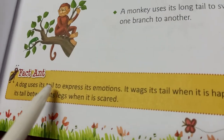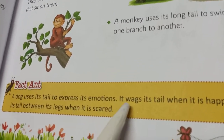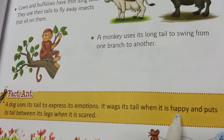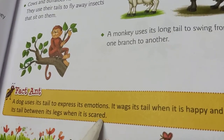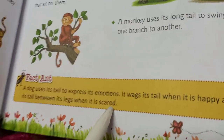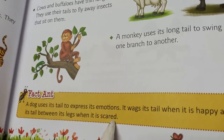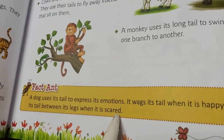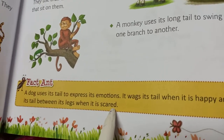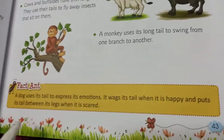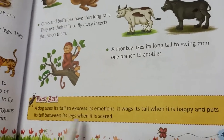A dog uses its tail to express its emotions. It wags its tail when it is happy. When it is scared, it puts its tail between its legs. You can notice this if you have a pet dog.